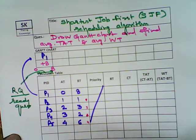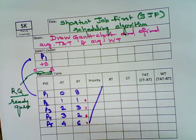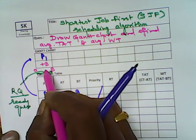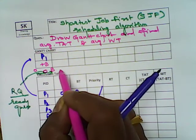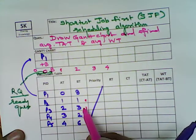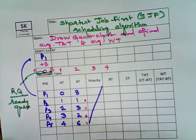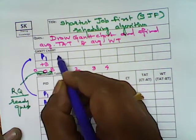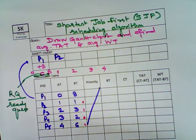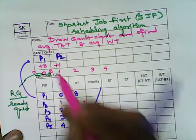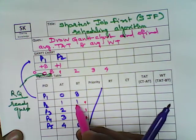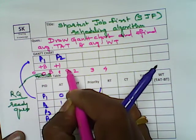If I am putting arrival time 0, let me put it as 1, 2, 3, 4. What is the next process going to come here? It is P2. P2 needs how much time to process? It needs plus 1 time. That is, burst time is equal to 1 unit time. So plus 8 plus 1 becomes 9 here.